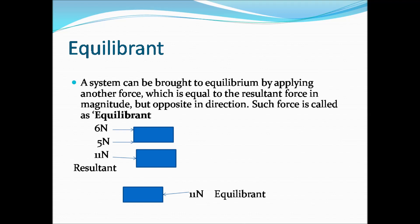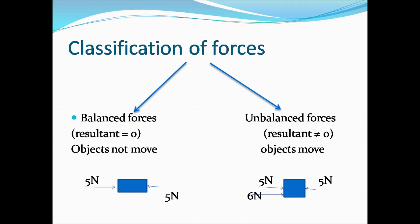For example, consider a block where forces of 6 N and 5 N act in the same direction — the resultant is 11 N, and the block moves to the right. To bring it to equilibrium, we apply 11 N in the opposite direction. This equilibrant force brings the block to rest.